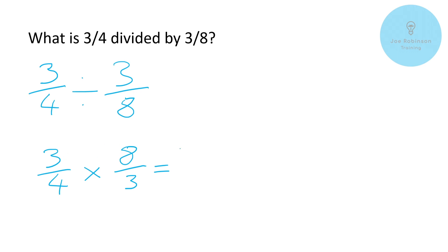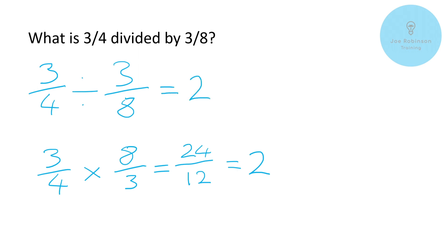Three times eight gives us 24, and four times three gives us 12 on the bottom, so that's 24 over 12. If we simplify that — 24 over 12 is the same as 24 divided by 12 — that gives us the answer of 2. Therefore three quarters divided by three eighths is equal to 2. That's our first example.